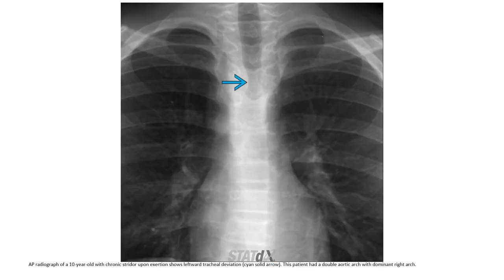AP radiograph of a 10-year-old with chronic stridor. This patient had a double aortic arch with dominant right arch.